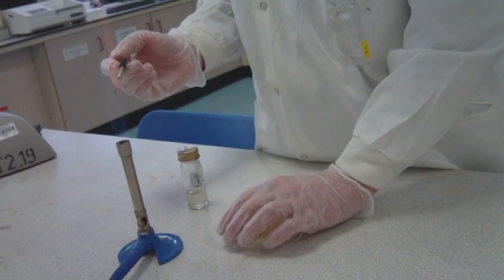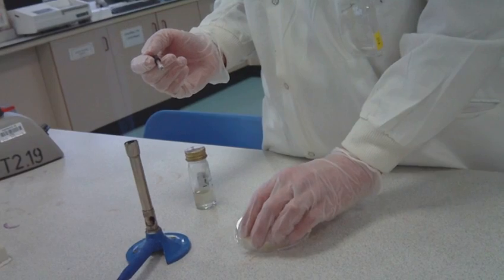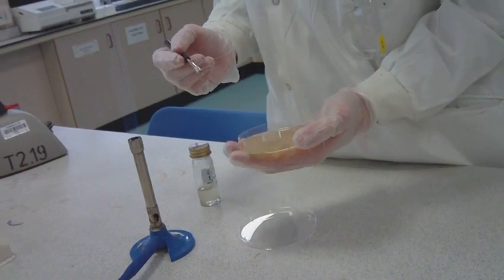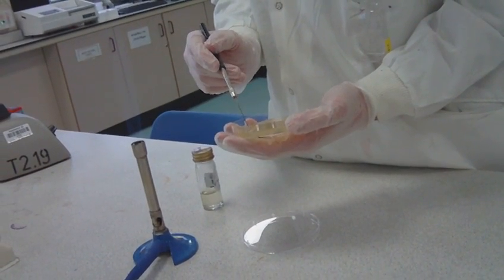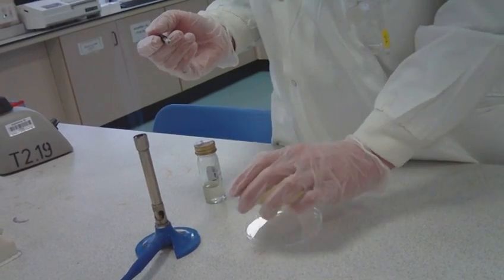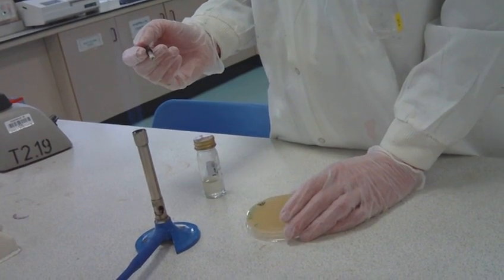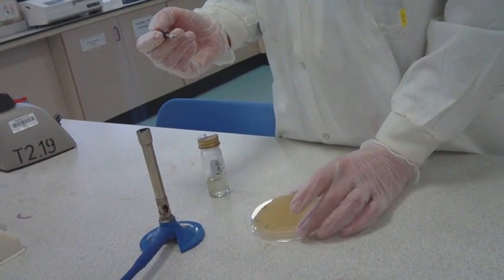Reflame the inoculation loop. In the last quarter of the agar, streak the bacterium in a zigzag formation towards the middle. Be careful not to streak the bacterium where you have previously streaked as it will not give the desired separation. The zigzag should not touch the sides of the petri dish.